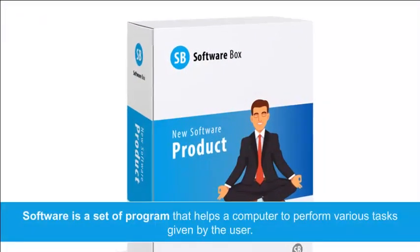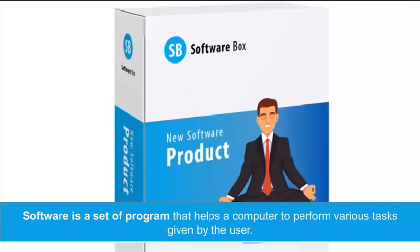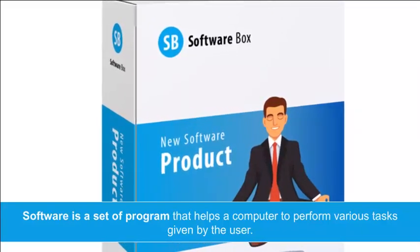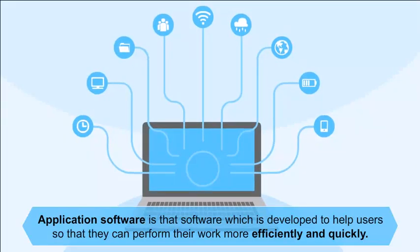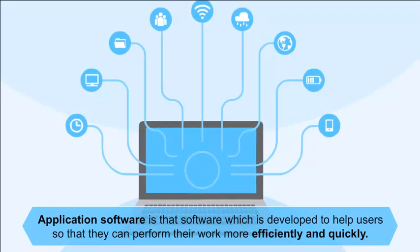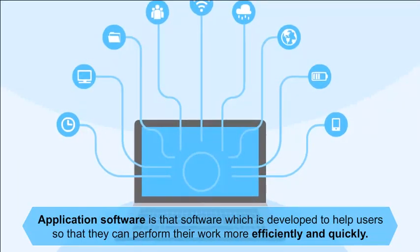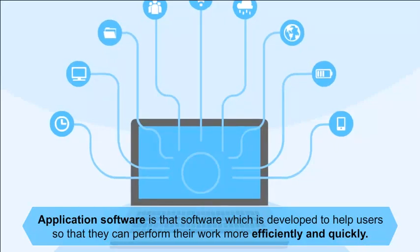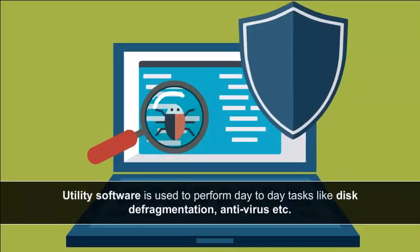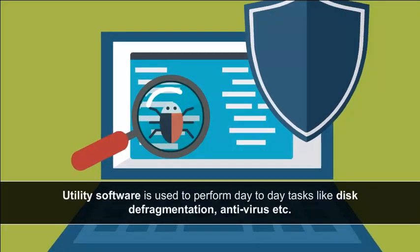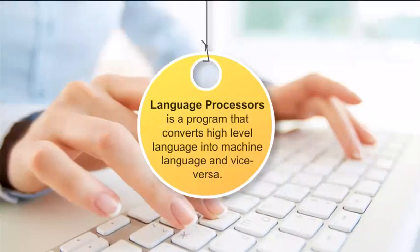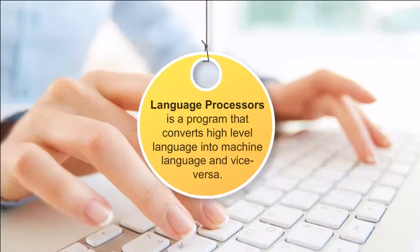Software is a set of programs that helps a computer perform various tasks given by the user. Software can be further classified as: System software — a set of programs that helps control the hardware parts of the computer system; Application software — developed to help users perform their work more efficiently and quickly, like MS Office; Utility software — used to perform day-to-day tasks like disk defragmentation and antivirus; and Language processors — programs that convert high-level language into machine language and vice versa.